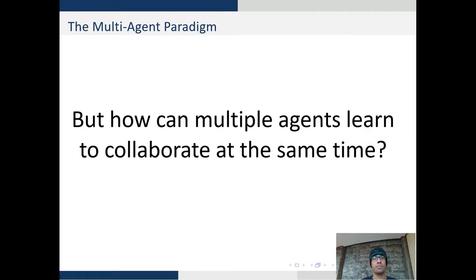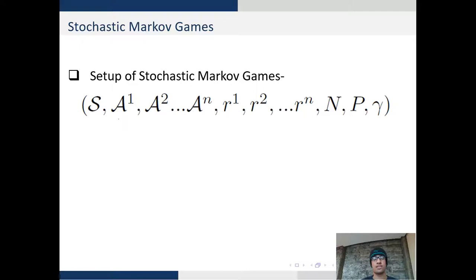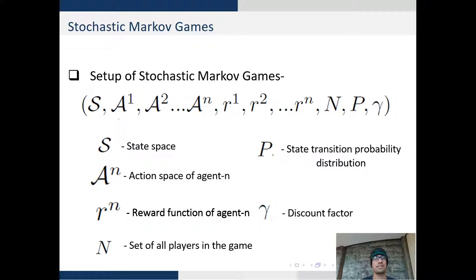But how do multiple agents learn to collaborate at the same time? To study this we focus our attention to stochastic Markov games which is a tuple consisting of various entities where S is the state space of agents.